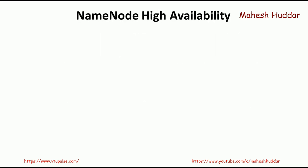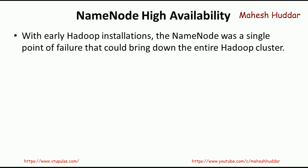The next concept is Name Node High Availability. In a default Hadoop installation, there is a single Name Node. If this Name Node fails, the entire cluster will fail. For example, if we have one Name Node and 100 Data Nodes, and all 100 Data Nodes are working fine but the single Name Node fails due to power fluctuation or memory corruption, we will not be able to use the cluster at all.